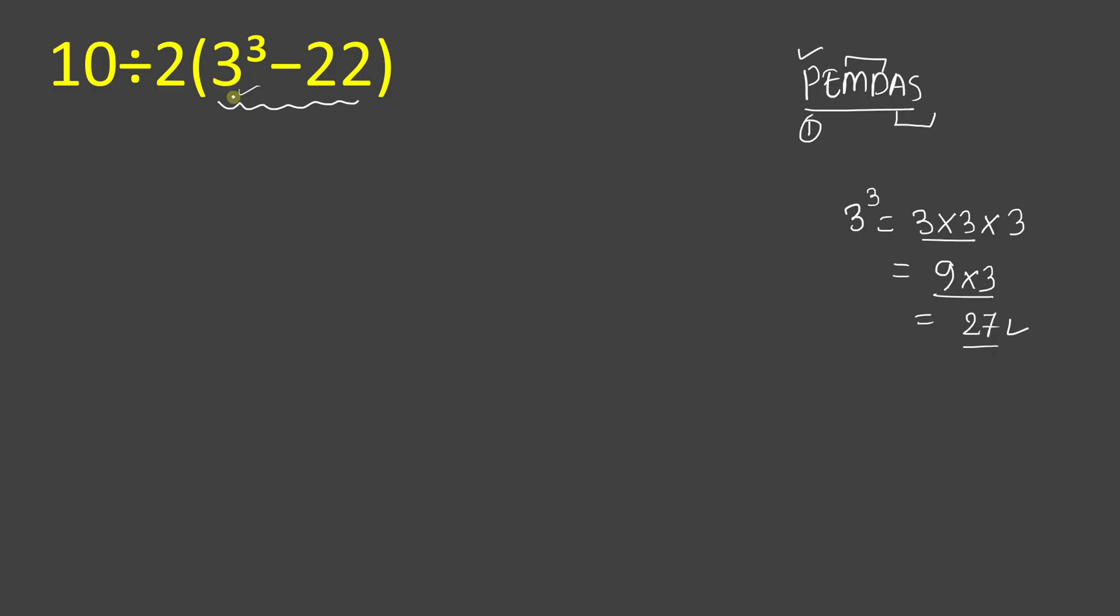So 27 can be written here. We will rewrite our expression as 10 divided by 2 parenthesis 27 minus 22. Now we will do this parenthesis operation: 27 minus 22 will give result of 5. So we will write 10 divided by 2 times 5.